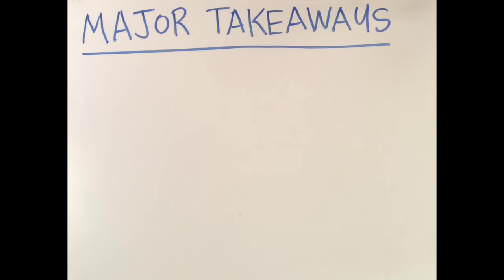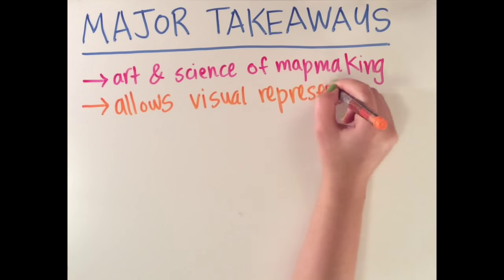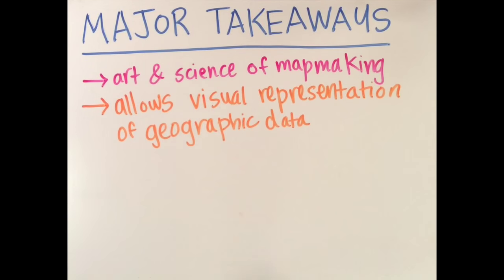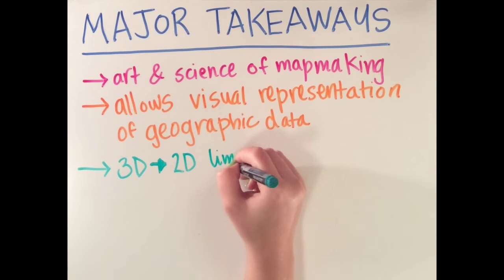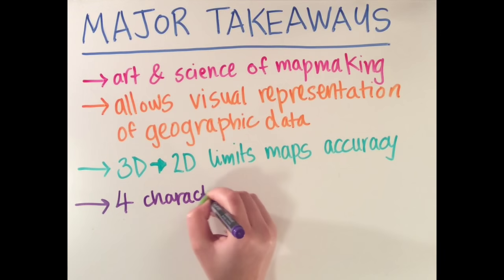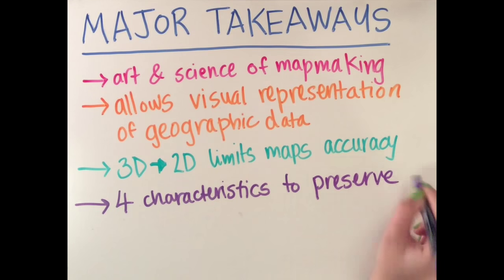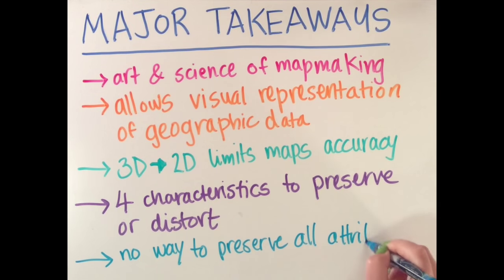In conclusion, cartography is the art and science of making maps. It allows for the representation of geographic data visually. Map projections help represent a 3D Earth on a 2D map, but this transformation limits the accuracy of the representation. There are four major characteristics that projections can either preserve or distort on a map. And finally, all characteristics cannot be preserved on a map.